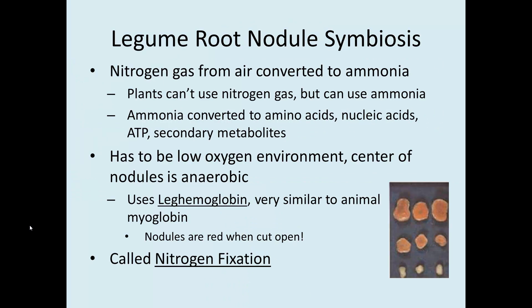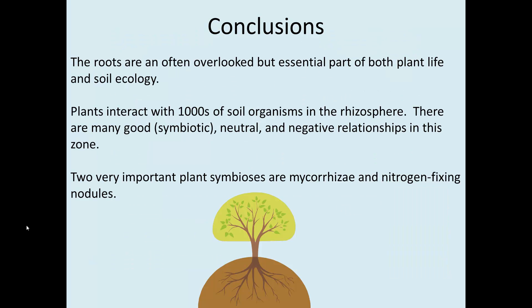Once the nitrogen is converted to ammonia and passed to the plant, the plant uses it for all sorts of things — just as it would if fertilized with ammonia. This is called nitrogen fixation: taking unavailable nitrogen and making it into an available form, just as carbon dioxide fixation is photosynthesis. The bacteria receive carbohydrates in exchange, so they are provided the materials they need to live and a structure to live in. In conclusion, roots are often overlooked in botany, but they are essential to plant metabolism and soil ecology. Two very important symbiotic relationships are mycorrhizae and nitrogen-fixing nodules.